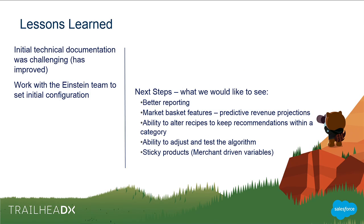Some of Black Diamond's lessons learned: the initial technical documentation was challenging — we heard that and adjusted quickly. They recommend working with my team. For next steps and their wish list: better reporting (we have pretty basic reporting specific to recommendations right now); market basket features like predictive revenue projections; the ability to keep recommendations within a category (this is actually available — it was a knowledge gap); the ability to adjust and test the algorithm (it's constantly being adjusted behind the scenes, and the configurator is the best way to get the most from it); and sticky products — being able to manually push one product into a zone for high inventory situations.